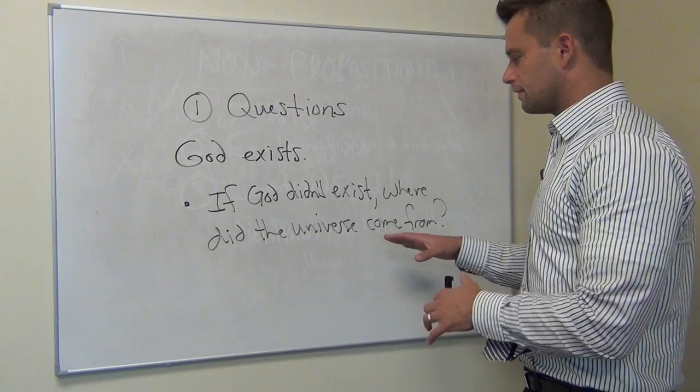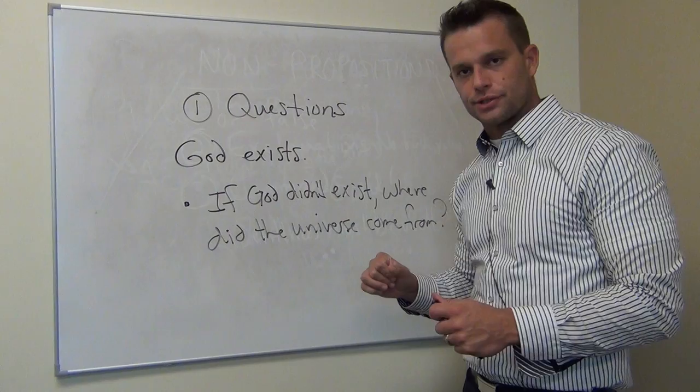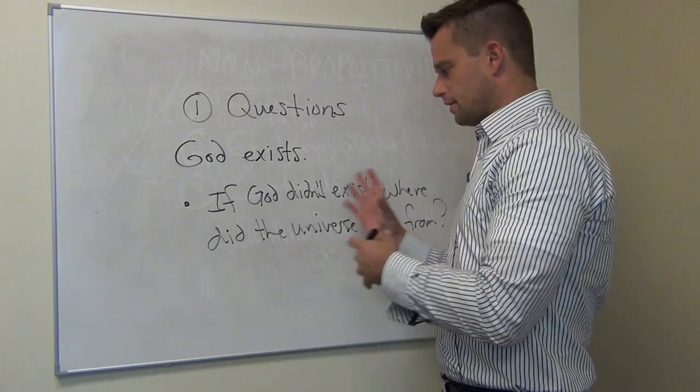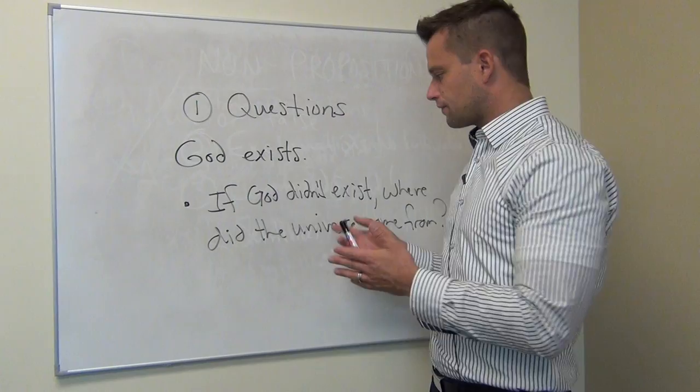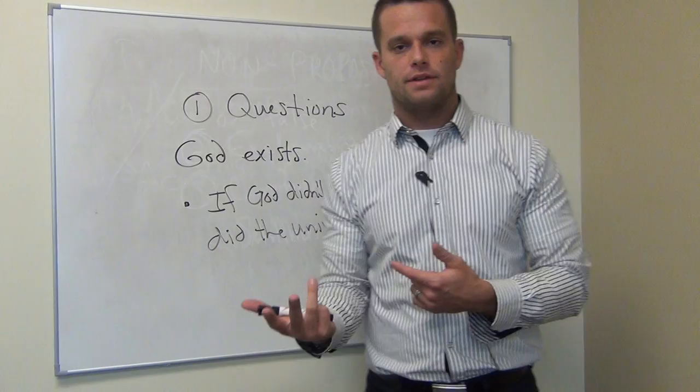There are a lot of presuppositions in that statement. If your conclusion is 'God exists' and then you ask, 'If God didn't exist, where did the universe come from?' — that's kind of a red herring. It also misplaces the burden of proof. If you're trying to prove that God exists, the burden of proof rests on you to provide reasons why someone ought to believe that God exists.